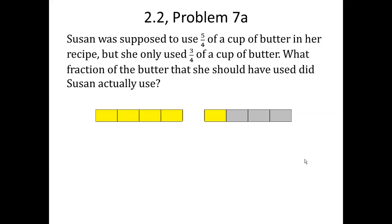Susan was supposed to use 5 fourths of a cup of butter in her recipe, but she only used 3 fourths of a cup of butter. What fraction of the butter that she should have used did Susan actually use?